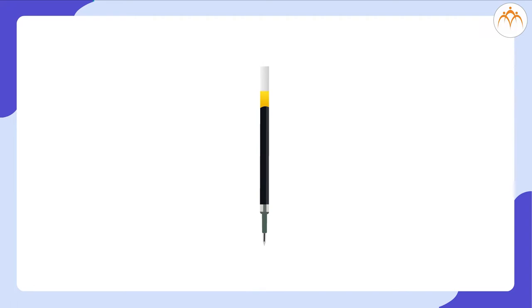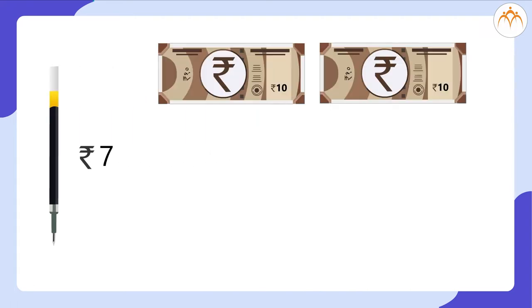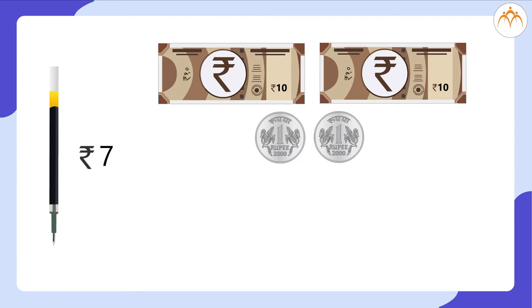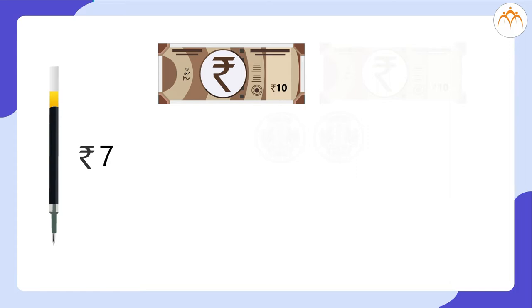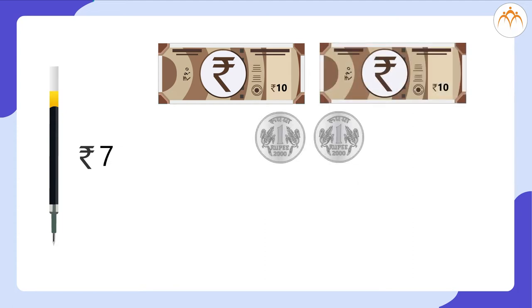I went to buy my pen's refill and it was costing me 7 rupees. I had two notes of 10 rupees each and two coins of 1 rupee each in my pocket. I gave one note of 10 rupees to the shopkeeper, but he asked me to give 7 rupees as change. I had only two coins of 1 rupee each — so how would I give him 7 rupees as change?